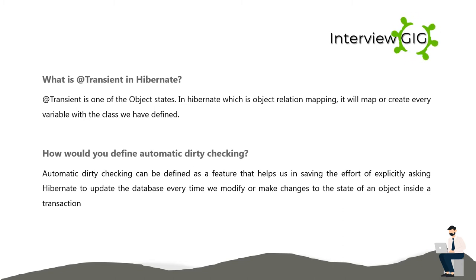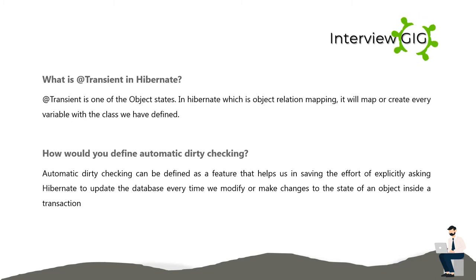How would you define automatic dirty checking? Automatic dirty checking can be defined as a feature that helps us save the effort of explicitly asking Hibernate to update the database every time we modify or make changes to the state of an object inside a transaction.